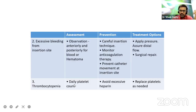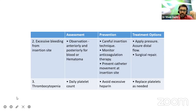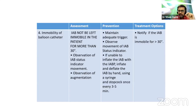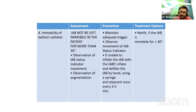Immobility of the balloon catheter: IABP should not be left immobile. Observe IABP status indicator movement and augmentation; maintain adequate trigger. If unable to inflate, inflate and deflate the IAB by hand using a syringe and stop-cock once every three to five minutes to prevent complications from immobility of the balloon catheter.